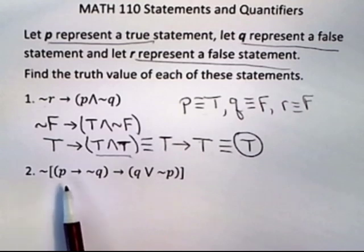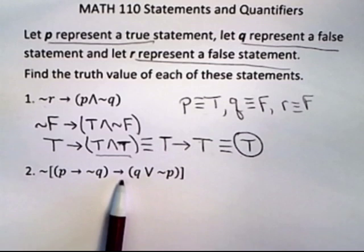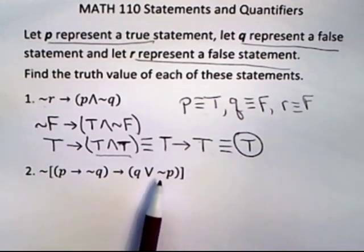Now we're going to do a second problem. The second problem is quite a bit more complicated, but the idea is the same. You're going to have an implication. We've already looked at that truth table. You're going to have a negation. We've already looked at that.